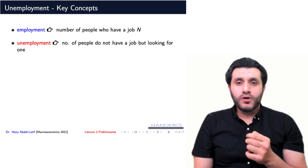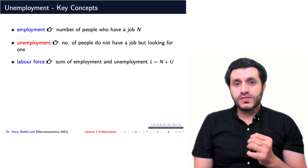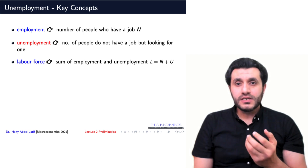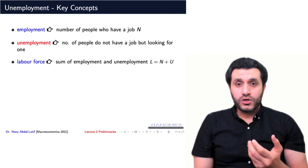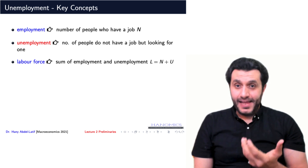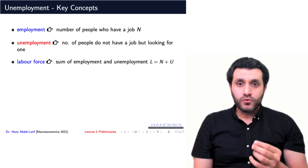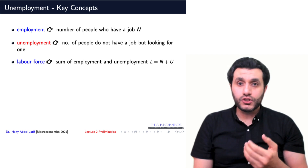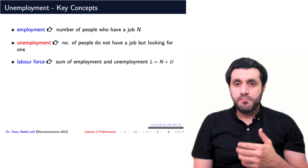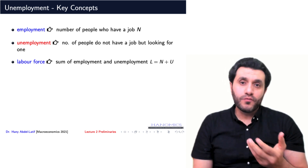Let's denote unemployment as capital U. The next concept we should learn about is the labor force, which is the sum of the employed individuals and the unemployed individuals. In other words, the labor force L equals N plus U. When calculating the labor force, we exclude people who are outside the working age group, say below 16 and over 65, and those who are not available for work.